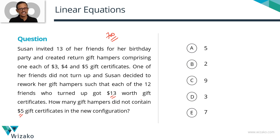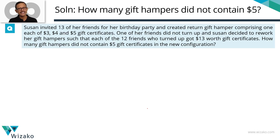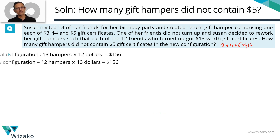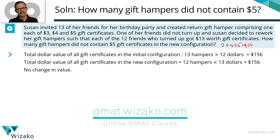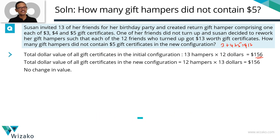Let's start with what she initially intended to do. She had 13 friends and was planning to give one each of $3, $4, and $5 worth of certificate. So a gift hamper would have had one $3, one $4, and one $5 — that's $12 worth of gift certificates. She was planning to give to 13 friends: 13 hampers at $12 value per hamper, so $156 worth of gifts total.